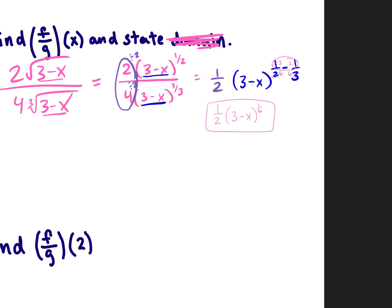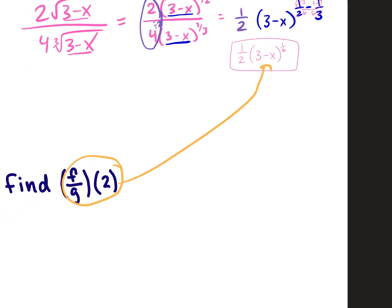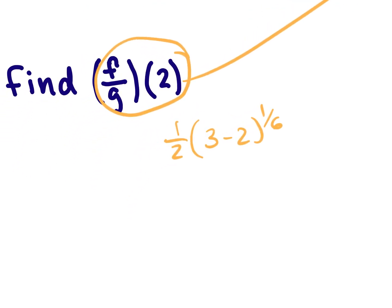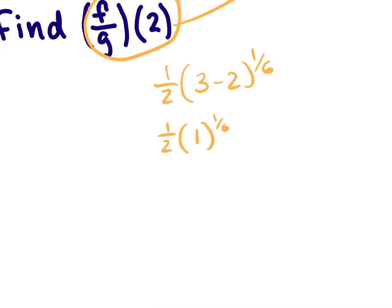For the next part, find f divided by g of 2 by plugging 2 into x. So we have 1/2 times (3 minus 2) to the 1/6 power. Three minus 2 is 1, and 1 to the 1/6 power is 1. So this is 1/2 times 1, which equals 1/2.